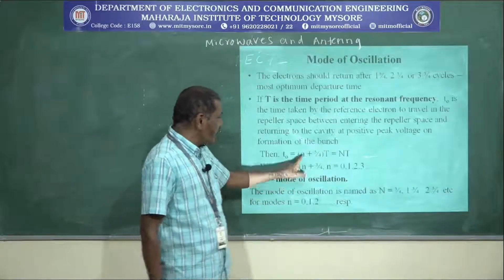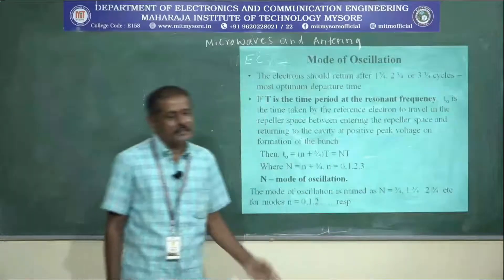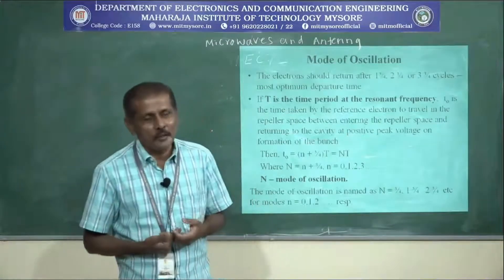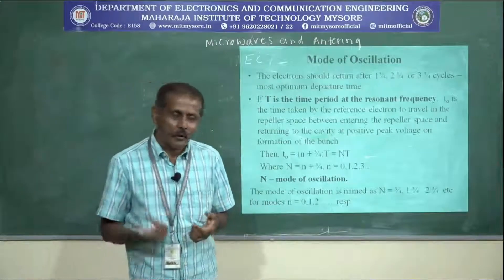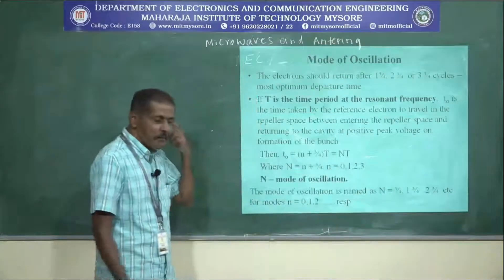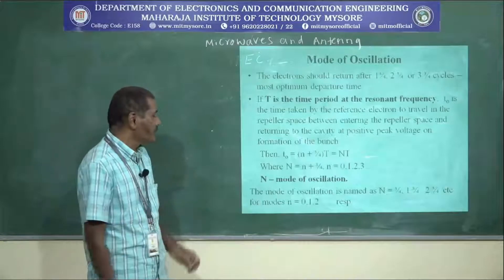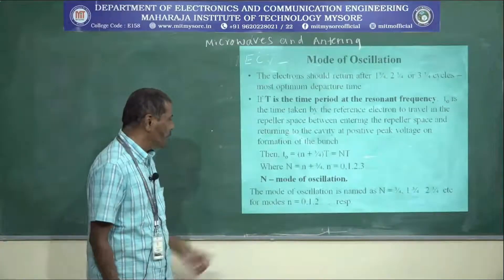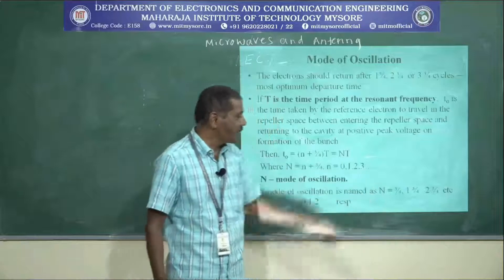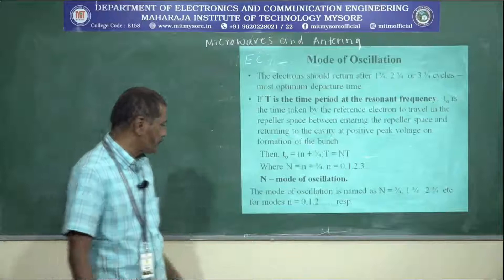N takes values 0, 1, 2, 3, 4, and so on. If N equals 0, that is the 0th mode; N equals 1 is the 1st mode; N equals 2 is the 2nd mode. The modes are named as the 3/4 mode, 1 and 3/4 mode, 2 and 3/4 mode, etc.